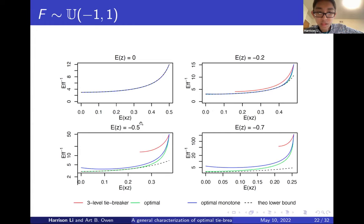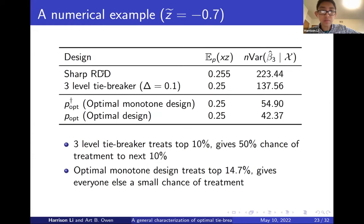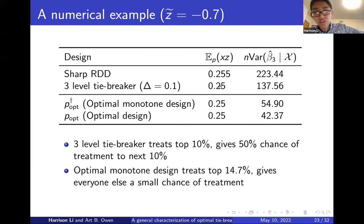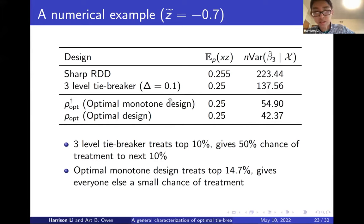As treatment becomes less common, you see a bigger drop in efficiency gains going from the three-level tiebreaker to the optimal monotone design, and a smaller additional drop if you remove the monotonicity constraint. To put some numbers on this: the Owen and Varian paper showed you can give up some short-term gain to get a big gain in efficiency. But our results show that keeping the same level of short-term gain as the three-level tiebreaker while going to the two-level optimal monotone design gives an even bigger drop in variance, with further reduction if you forego monotonicity.